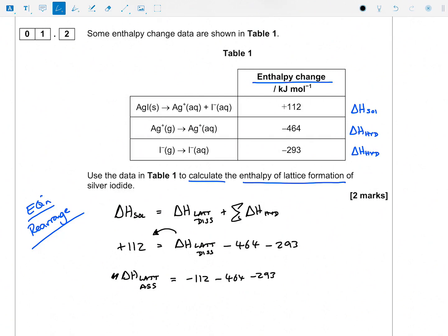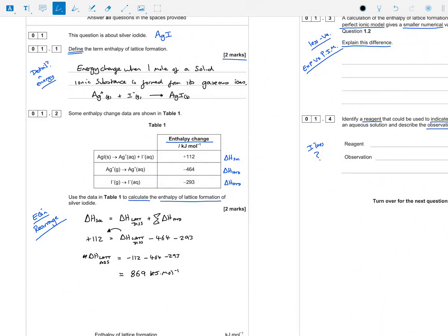So what I'm going to get here is minus 112 minus 464 minus 293, and equals minus 869, that equals minus 869 kilojoules per mole. So I'm happy with that.